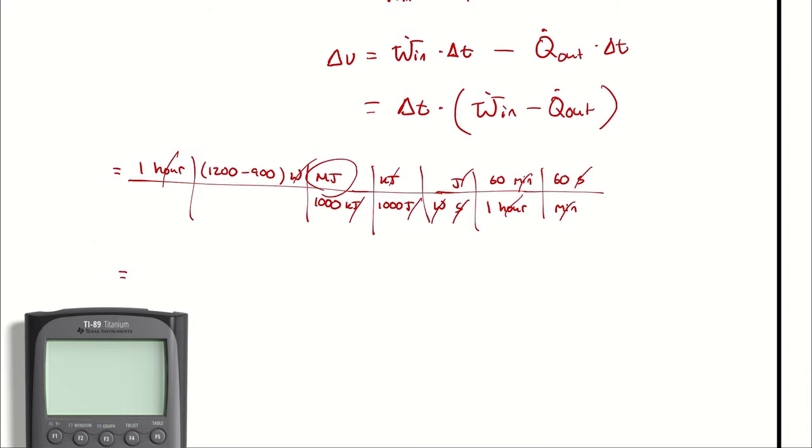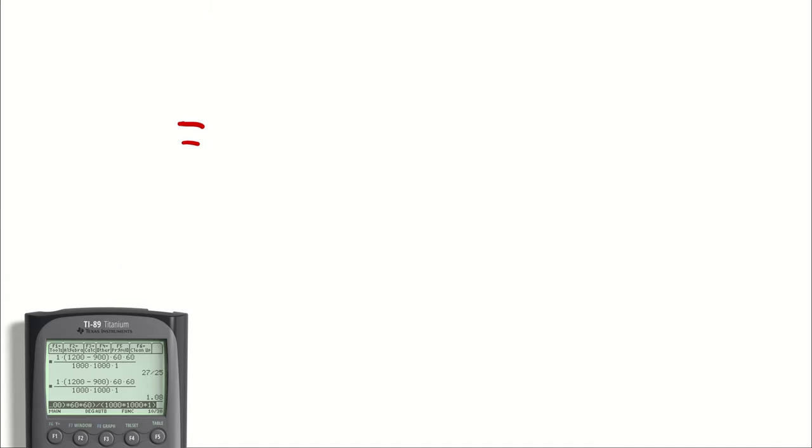So with a little help from my calculator, we can compute an answer. It's going to be 1 times the quantity 1200 minus 900 times 60 times 60 divided by the quantity 1000 times 1000 times 1. And I get 27/25ths. Or 1.08 megajoules.